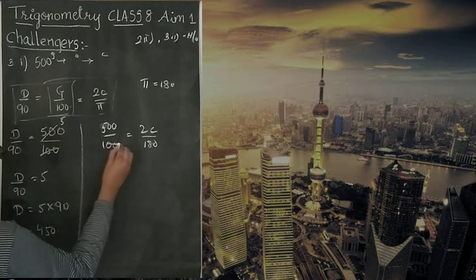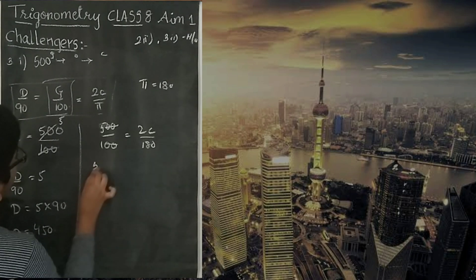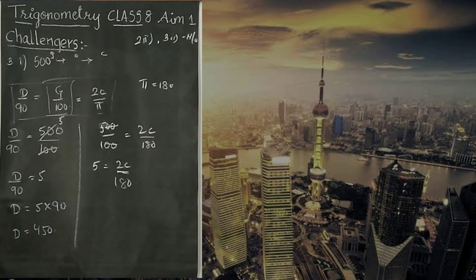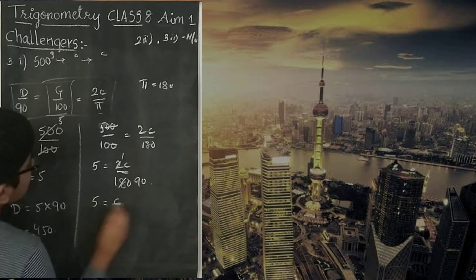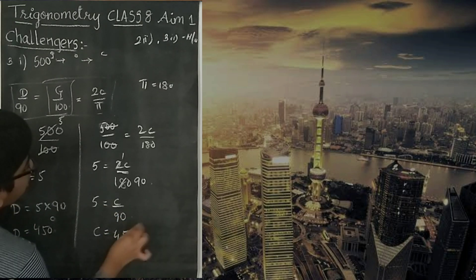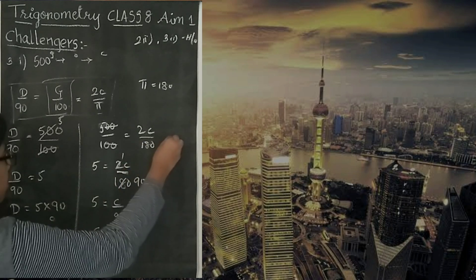G by 100 means 500 by 100 is equal to 2C by pi means 180. We all know this value. These two zeros cancel. 5 is equal to 2C by 180. You can cancel, 2 goes into 180 ninety times. 5 is equal to C by 90. 90 will come to the left hand side, it is 450. This is a very important unit. C is 95 by 450. Or else, you can directly keep it in pi values also. Instead of writing this, it will be pi.